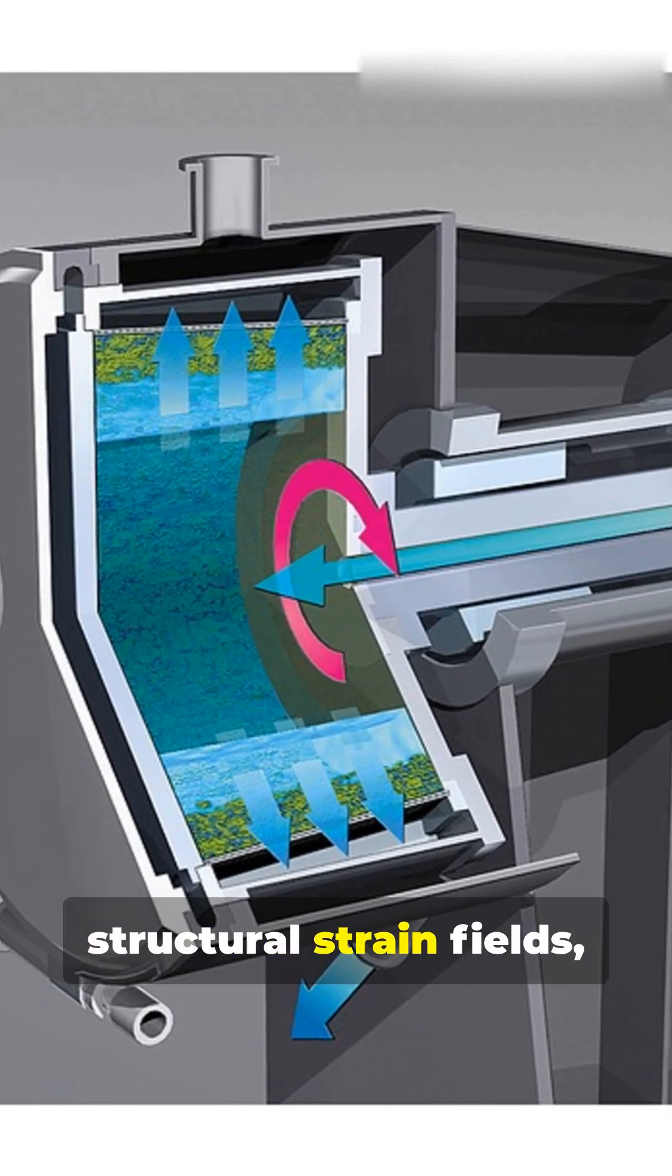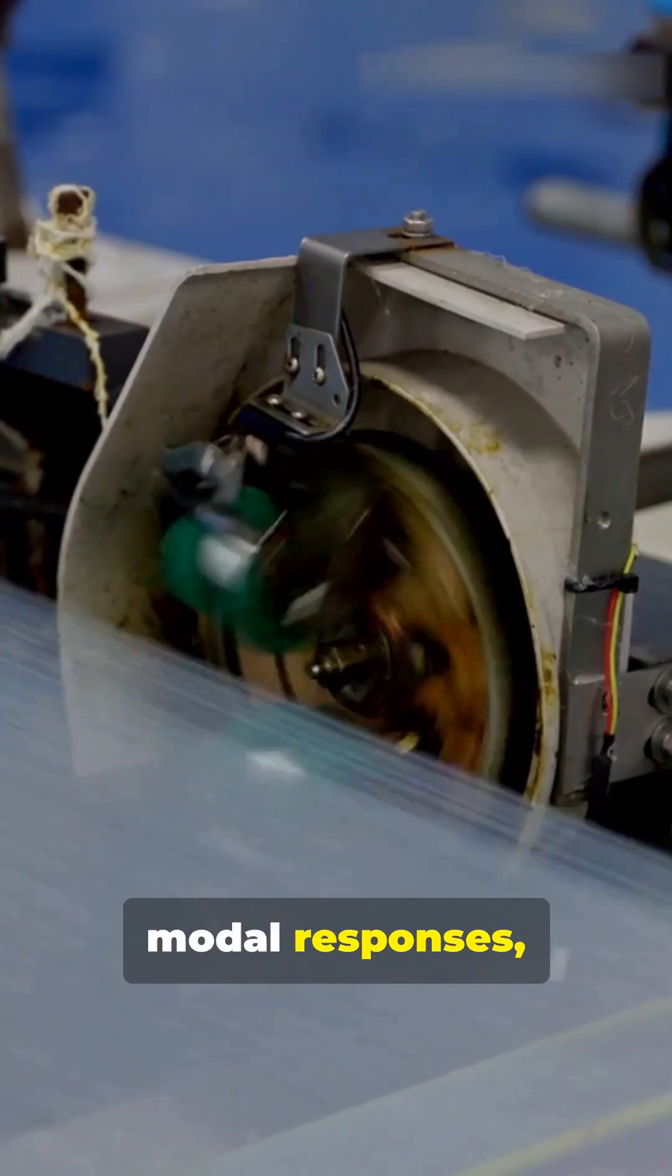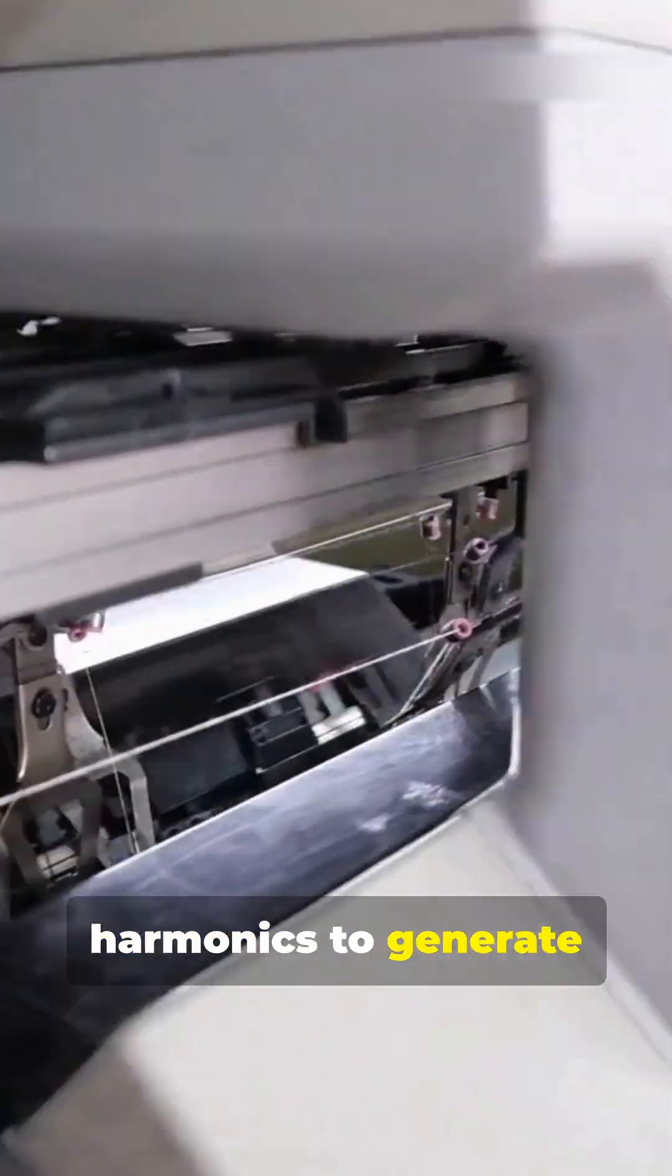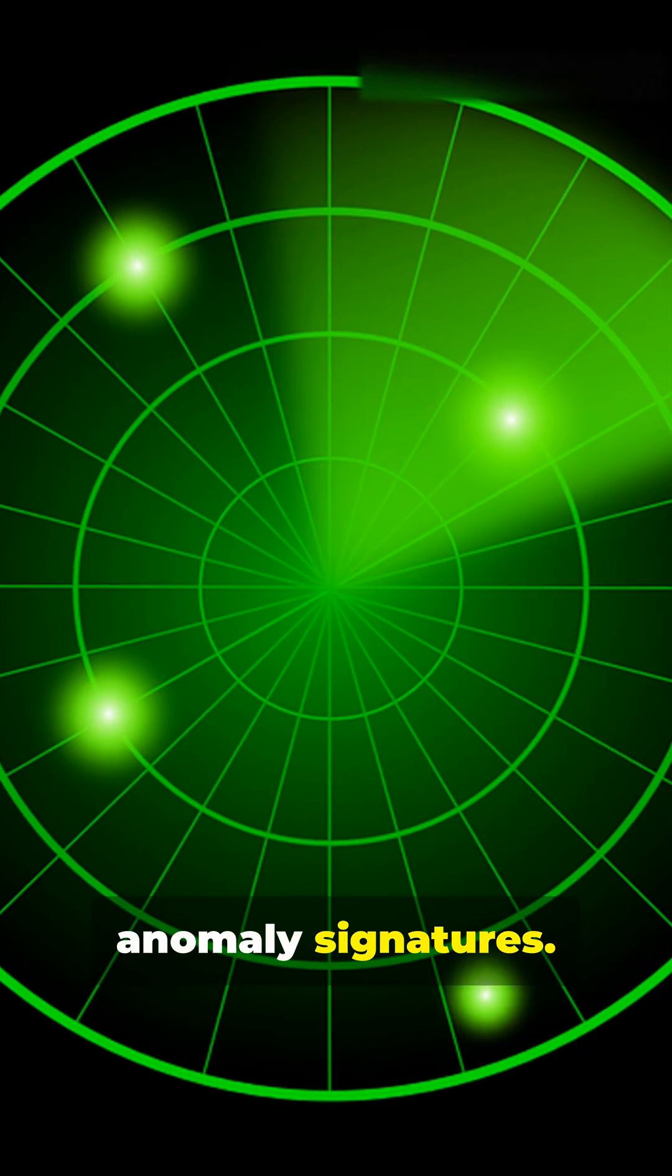Digital twins ingest structural strain fields, modal responses, hydraulic spectra, and vibration harmonics to generate RUL predictions and anomaly signatures.